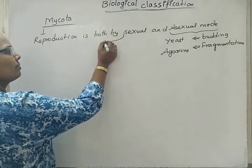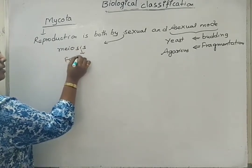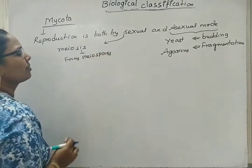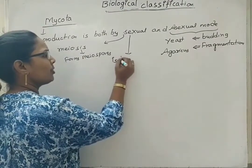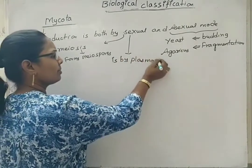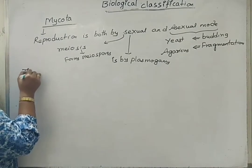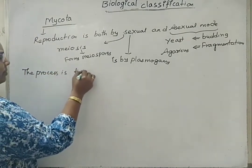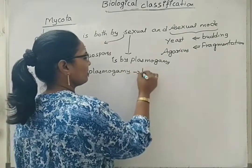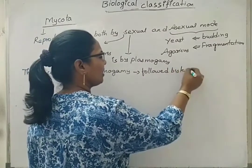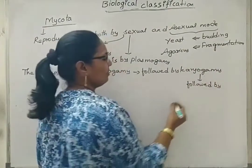Under sexual mode of reproduction, meiosis forms meiospores. There is no especially specific name for sexual mode of reproduction. But we can say sexual mode of reproduction is by plasmogamy, which is later followed by karyogamy, later followed by meiosis. So the process will be first plasmogamy, followed by karyogamy, followed by meiosis.